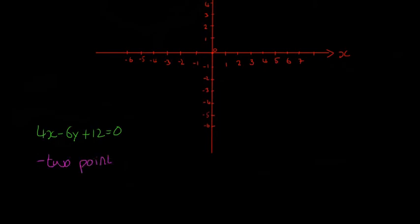So we need two points, and the easiest points to get are where it crosses the y-axis, and where it crosses the x-axis. So they're the easiest points to find.